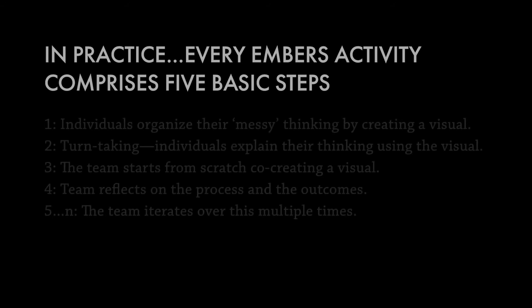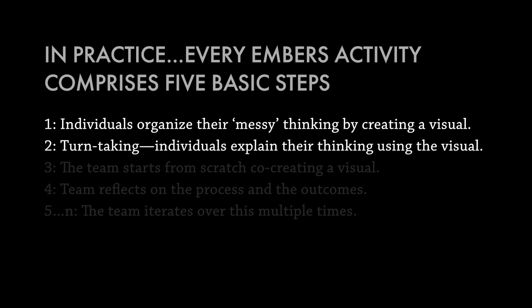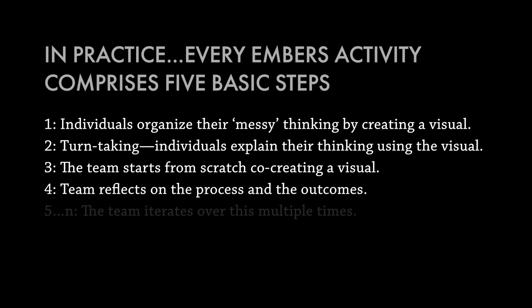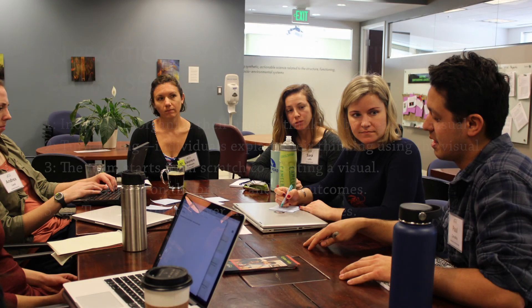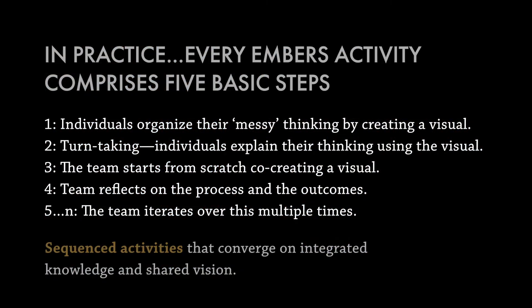Every Embers activity is comprised of five basic steps: we let individuals organize their messy thinking by creating a visual; then we do turn-taking, going around the table where each individual explains their thinking using a visual; then the team starts from scratch co-creating a visual; then the team reflects on the process and the outcomes; and then we iterate — that boundary negotiating object becomes the starting point for another iteration. We approach it from different perspectives with different kinds of diagrams and activities, thinking about it from different directions. Every activity is a little different, but they're sequenced to help you converge over time onto integrated conceptualizations, starting broad and gradually helping participants converge toward something that could become a shared problem model.